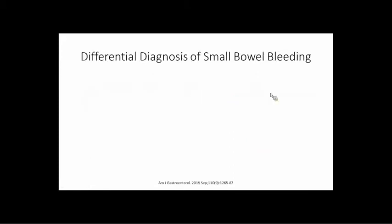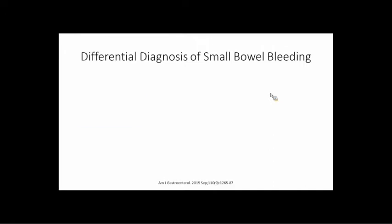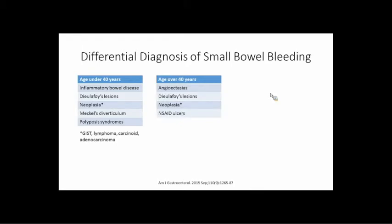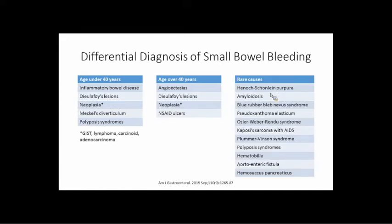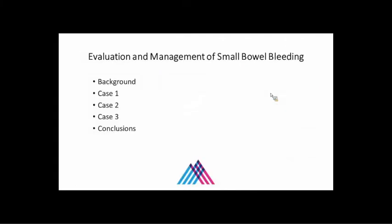What causes small bowel bleeding? The patient's demographics make a huge difference. For young patients, the most common causes are IBD, Dieulafoy lesions — which are ectatic arterioles that are submucosal and can bleed profusely — cancer, tumors, lymphoma, carcinoids, rarely adenocarcinoma, Meckel's diverticulum, and polyposis syndromes. In older patients, which is what we mostly see, it's almost always vascular — angiodysplasias and Dieulafoy lesions — though you can also see cancer and NSAID ulcers.